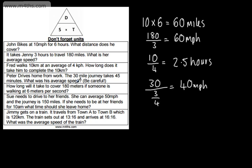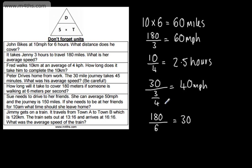How long will it take to cover 180 meters if someone is walking at 6 meters per second? This one is in meters, and we've got meters per second. We want the time, so we've got a distance of 180, and we divide that by 6. Distance is 180, speed is 6, so that's 180 over 6, which is going to be 30. This is in seconds, so it'll be 30 seconds.